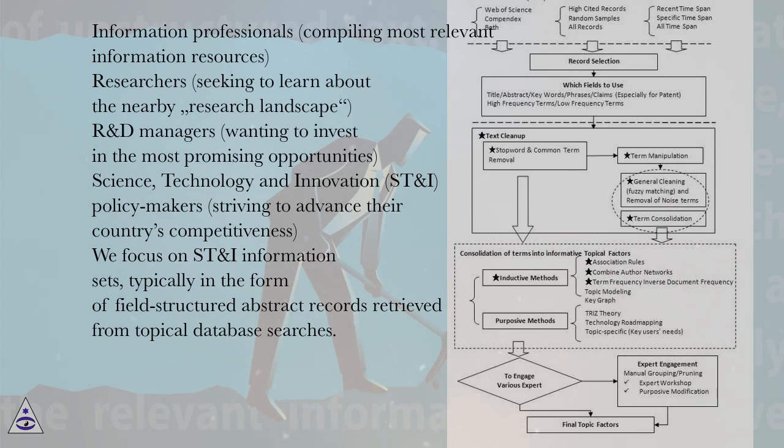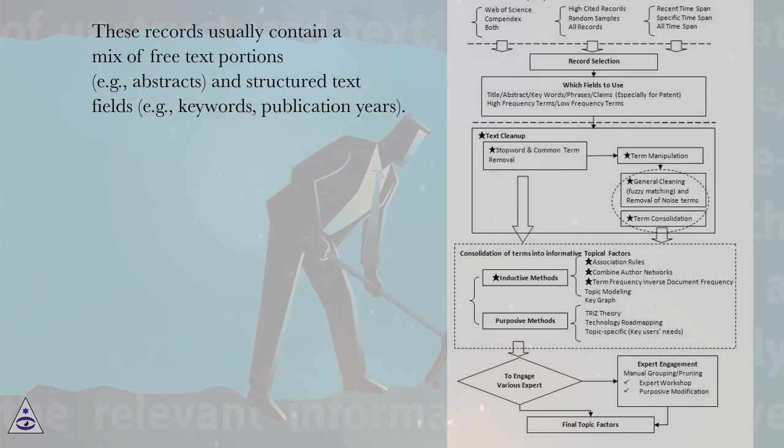typically in the form of field-structured abstract records retrieved from topical database searches. These records usually contain a mix of free text portions, for example, abstracts, and structured text fields, for example, keywords, publication years.